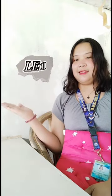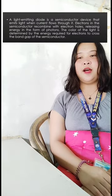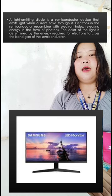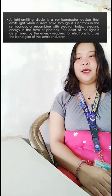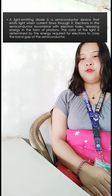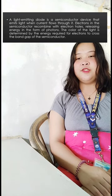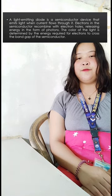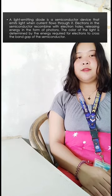This one is LED. A light emitting diode is a semiconductor device that emits light when current flows through it. Electrons in the semiconductor recombine with electron holes, releasing energy in the form of photons. The color of the light is determined by the energy required for electrons to cross the bandgap of the semiconductor.